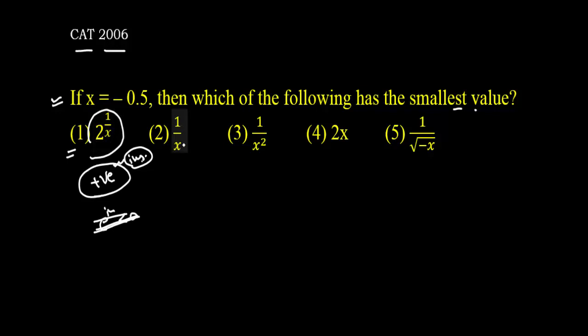So this number is positive. 1 upon x, obviously this should be negative. 1 upon x square: x is negative, x square should be positive. So 1 by positive is a positive number. 2 into x is a negative number.